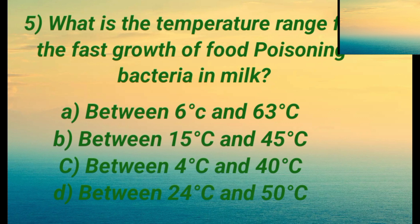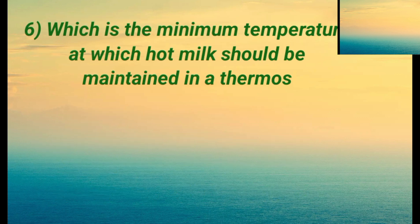Question five: what is the temperature range for the fast growth of food poisoning bacteria in milk? Option A is between 6°C and 63°C. Option B is between 15°C and 45°C. Option C is between 24°C and 50°C. The right answer is B: between 15 degrees Celsius and 45 degrees Celsius.